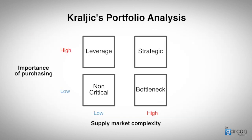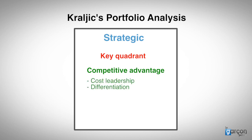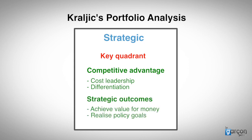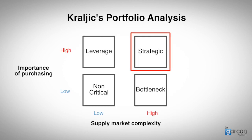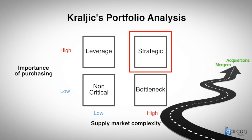So let's look at the final quadrant: strategic. Kralich saw this as the key quadrant for the development of strategic behaviour, and for good reason. This is where most companies source their competitive advantage, whether through cost leadership or differentiation. It's where public sector entities can contribute towards their strategic outcomes, whether through achieving value for money or realising policy goals. The point is that categories are not in this quadrant by chance. They are here as a result of business strategies pursued over several years — of patents, licences, acquisitions, and mergers.